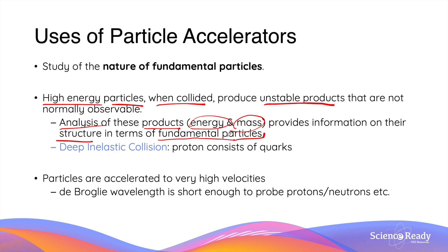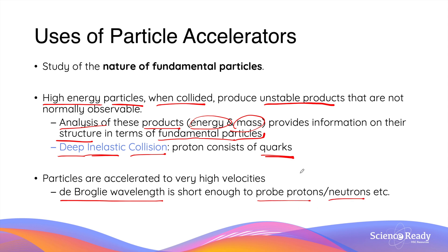For example, particle accelerators were originally used to collide an electron with a proton in an experiment called deep inelastic scattering, and this collision showed that protons were made of smaller particles called quarks. More recently, particles accelerated to high velocities were also shown to exhibit wave-like properties, confirming the wave-particle duality of matter. The de Broglie wavelengths were in fact short enough to probe protons and neutrons by producing images through diffraction and interference — a very similar principle to the investigation of nickel crystal structure by Davisson and Germer.